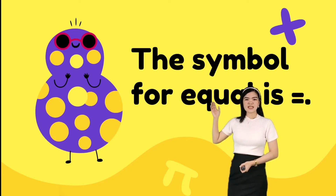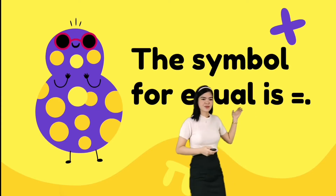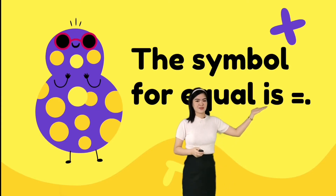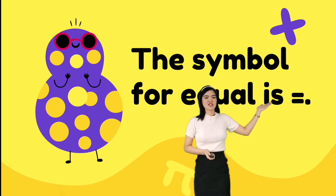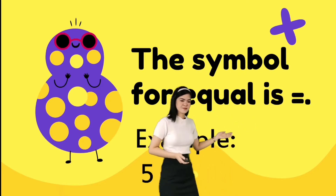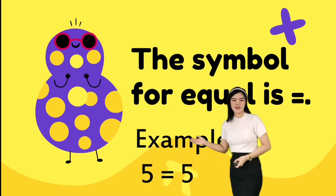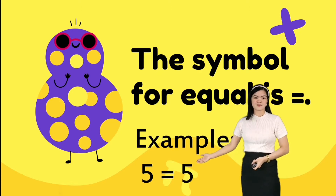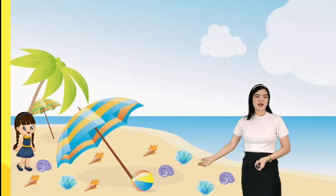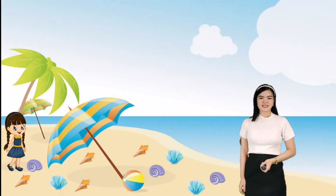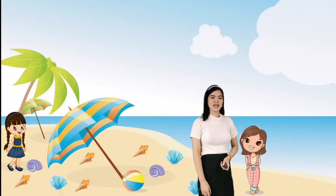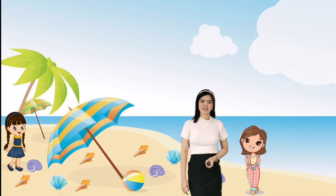The equal symbol is written as '='. So we can write: five is equal to five.